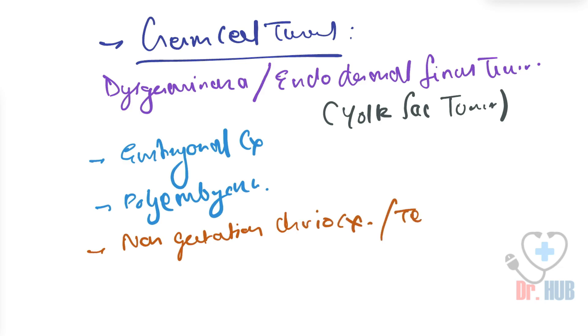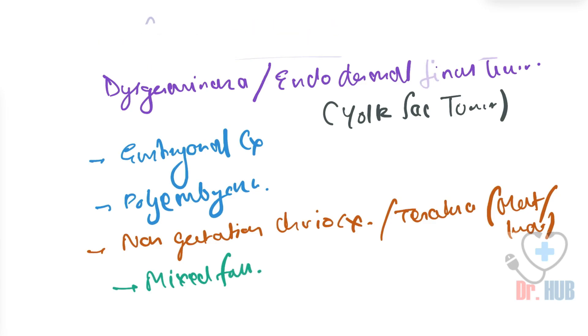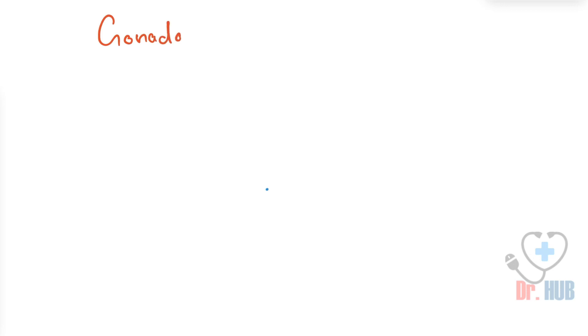Also under germ cell tumors there is the polyembryoma, then the non-gestational choriocarcinoma, and also the teratoma — which can be mature or immature. Then we also look at the mixed forms. Next we look at another category: the gonadoblastoma.